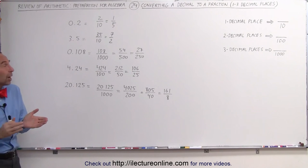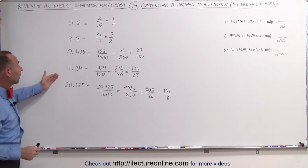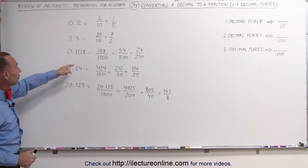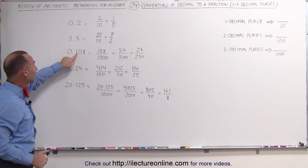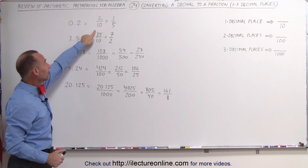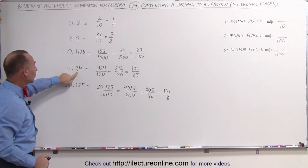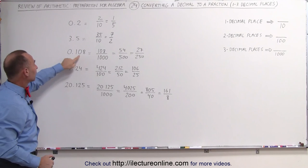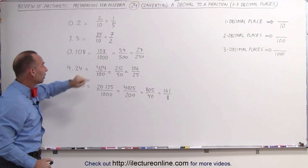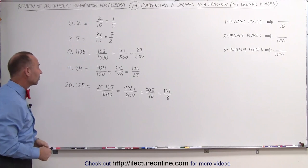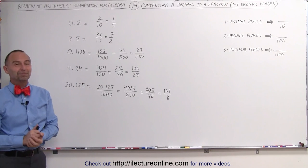All right, that's the technique. If you have a decimal and you want to convert it to a fraction, notice how many decimal places you have. If it's 1, write it as a fraction divided by 10. If it's 2, write it as a fraction divided by 100. If it's 3, write it as a fraction divided by 1,000. Then you simplify, and that's how it's done.